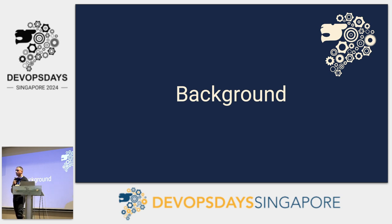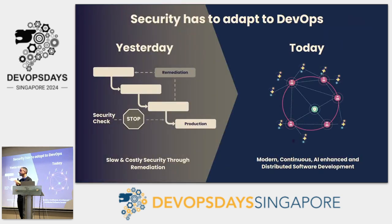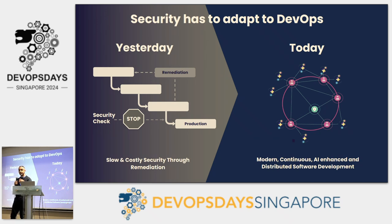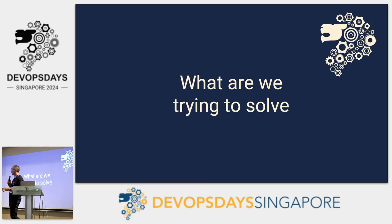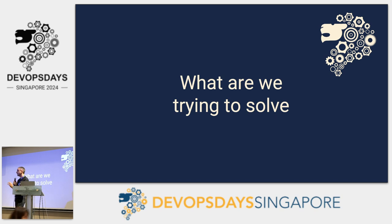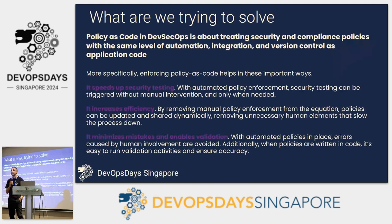Looking at the background: most organizations are well on their way on this journey, but there are still many organizations in secure DevOps that are in the world of stopgaps before deploying apps to production. I work with some of the largest banks that still have that. At the same time, most have embraced the modern continuous, AI-enhanced, and distributed software development process that lets you push applications to production as quickly as possible. The question is how do we do it securely?